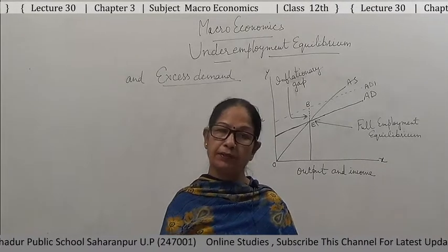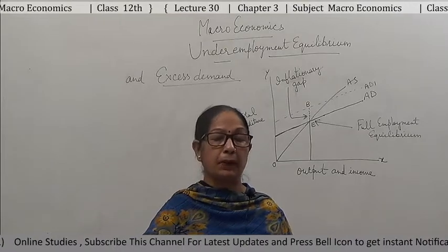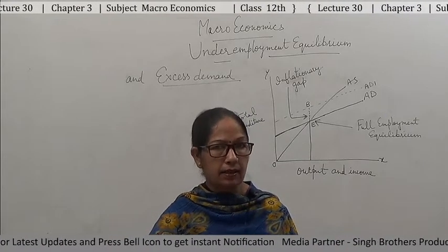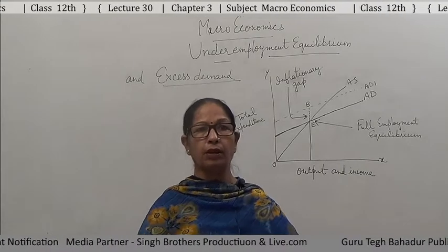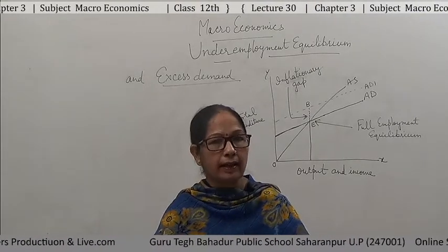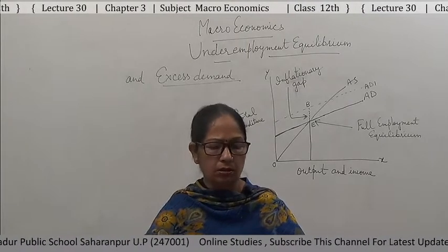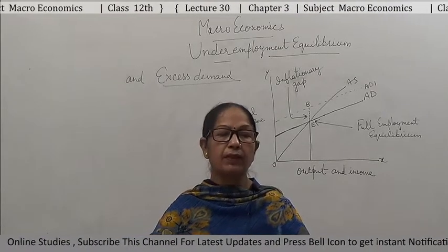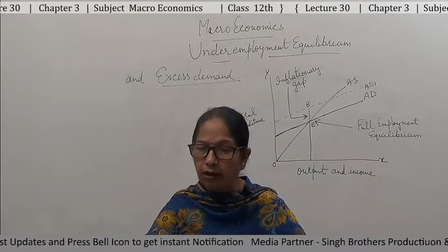Good morning students, hope you are fine. Yesterday I explained under-employment equilibrium as Keynes told us. Keynes explained that an economy can be in equilibrium at full employment as well as under-employment level, while the classical economists explained that any economy works at full employment level only. But Keynes explained that an economy can be at equilibrium at both conditions. Under-employment equilibrium means AD equals AS without full employment of resources.